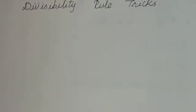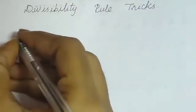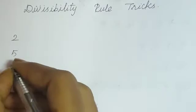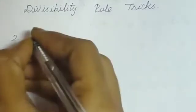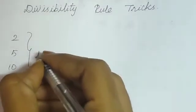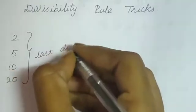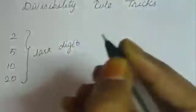Today we are going to have a quick recap of divisibility rule tricks. First, 2, 5, 10, and 20. In these four, the common factor is the last digit, the unit digit, which determines the divisibility rule.